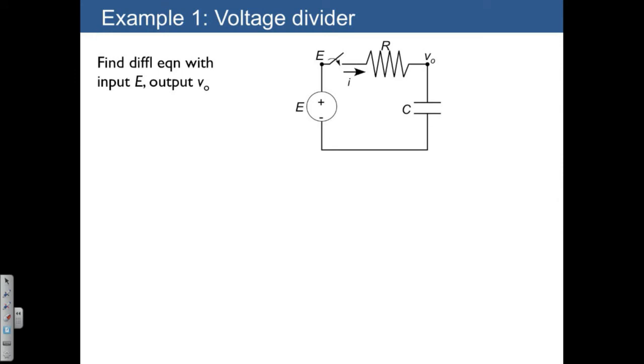Here's an example where we want to find the voltage across a capacitor where we have a resistor and a capacitor in series. If we use the voltage divider formula, our Z1 would just be equal to R, and Z2 would be equal to 1 over CS. The voltage divider formula was VO equals Z2 over Z1 plus Z2 times E.